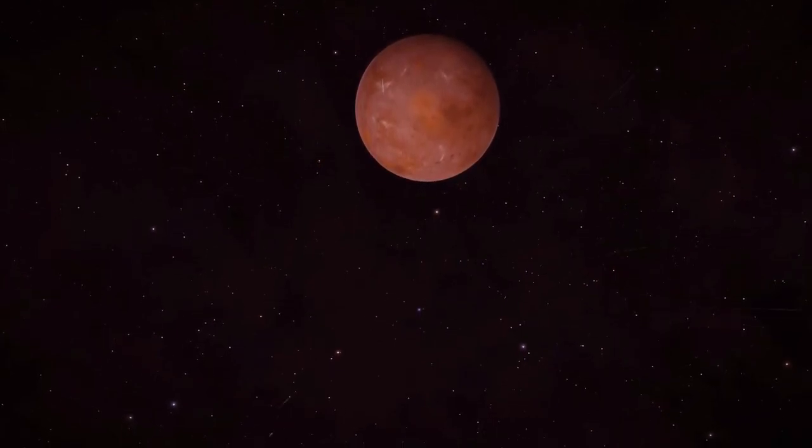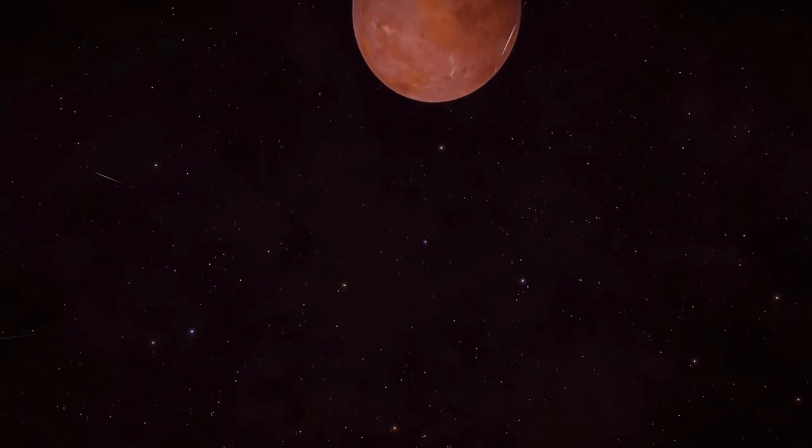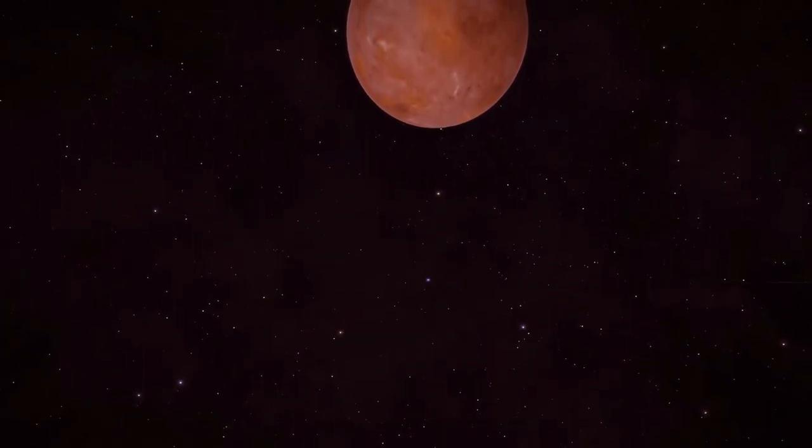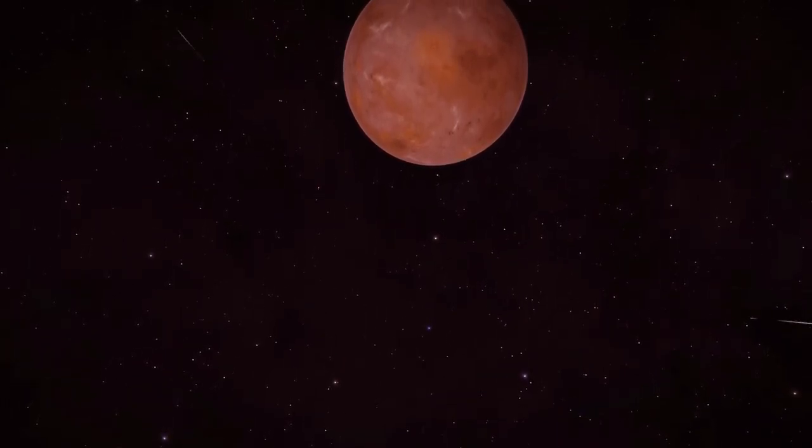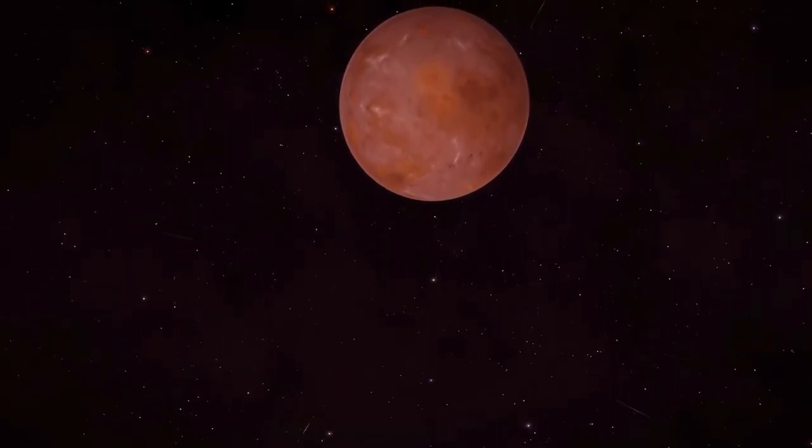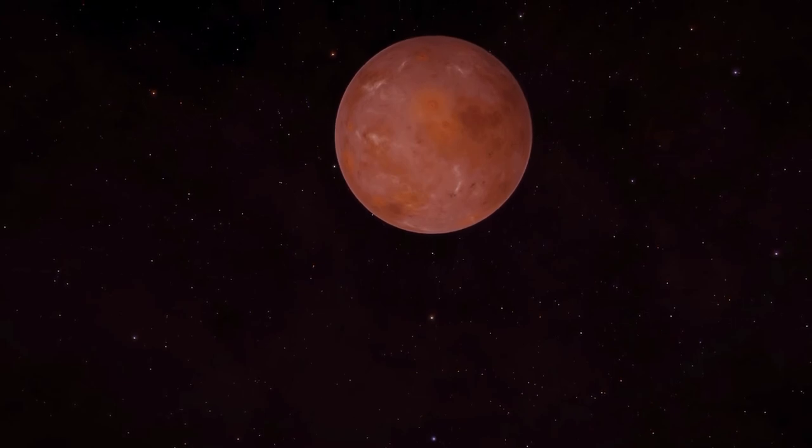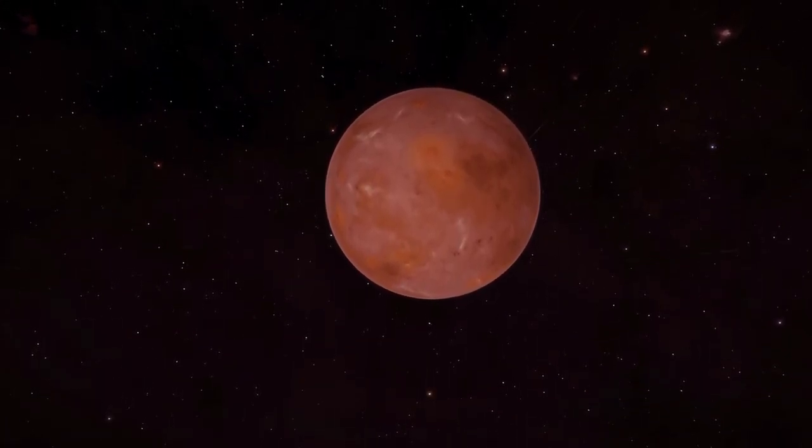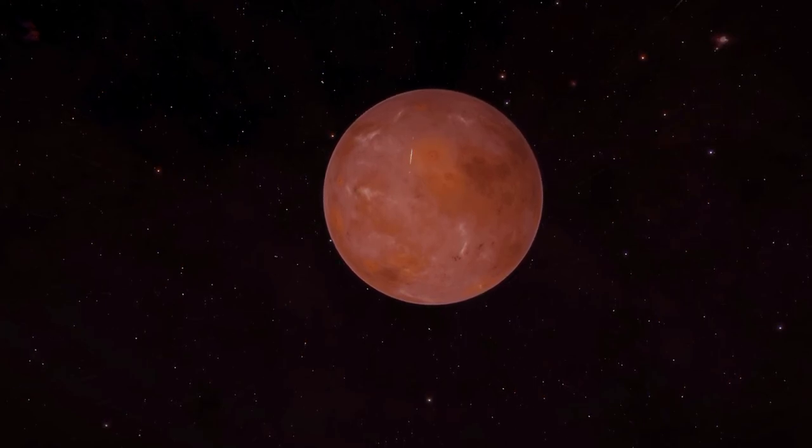Proxima Centauri b receives about 65% of the amount of radiative flux from its host star that the Earth receives from the Sun. For comparison, Mars receives about 43%. Most of the radiative flux from Proxima Centauri is in the infrared spectrum. In the visible spectrum, the exoplanet receives only 3% of the light.